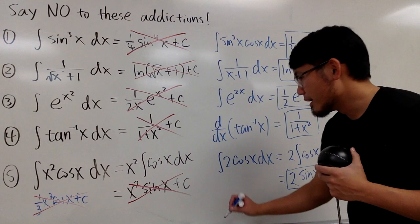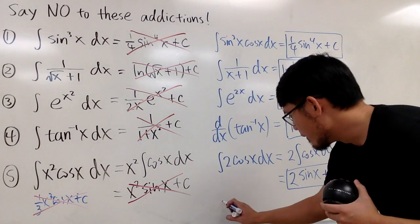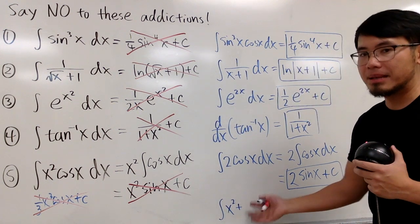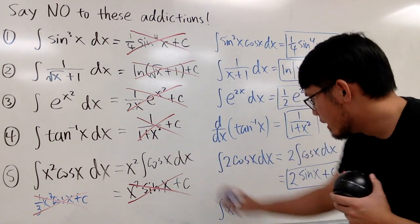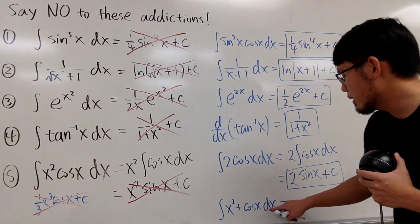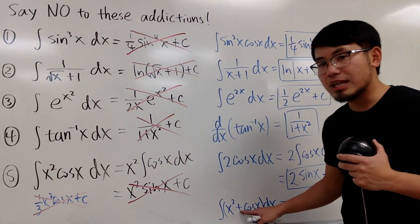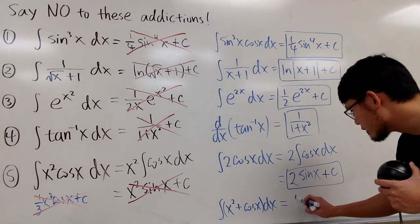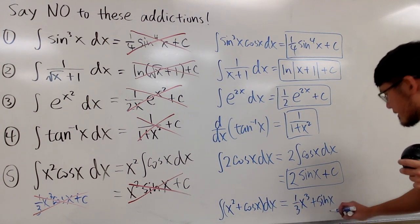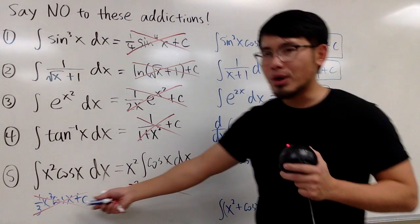You cannot just integrate one term of a product — this is actually one term because it is a product. The one you can do nicely is if you have the integral of x squared plus cos x — a sum. If there is a plus or minus in between, yes, you can integrate each piece: you get one-third x cubed plus sin x, and don't forget the plus c. That is correct. The product version is not.